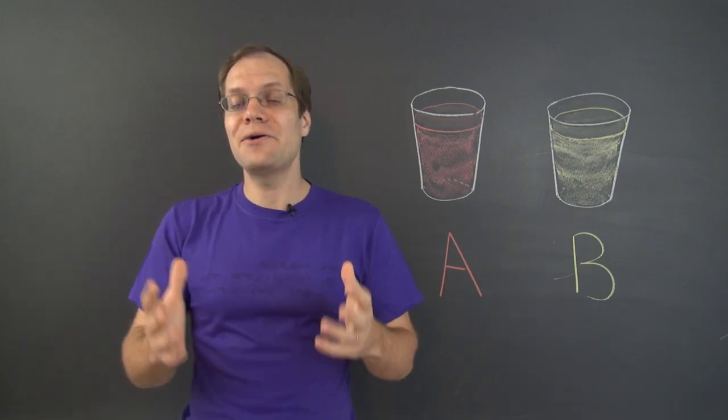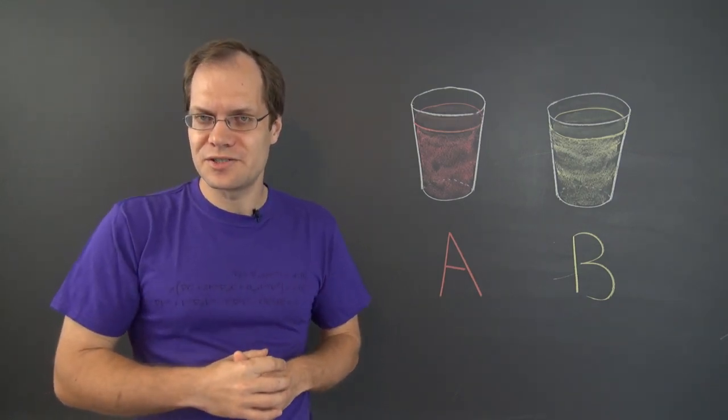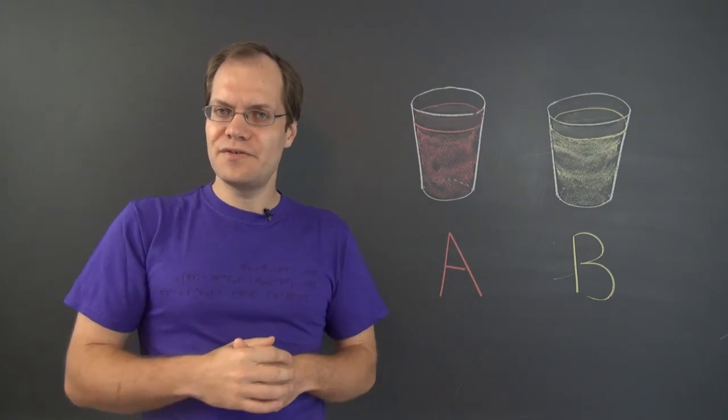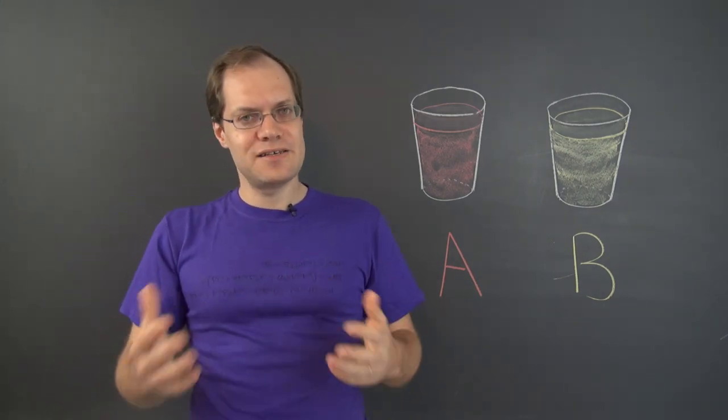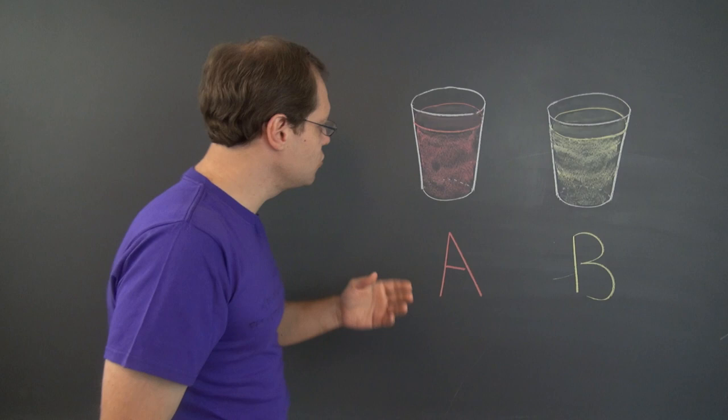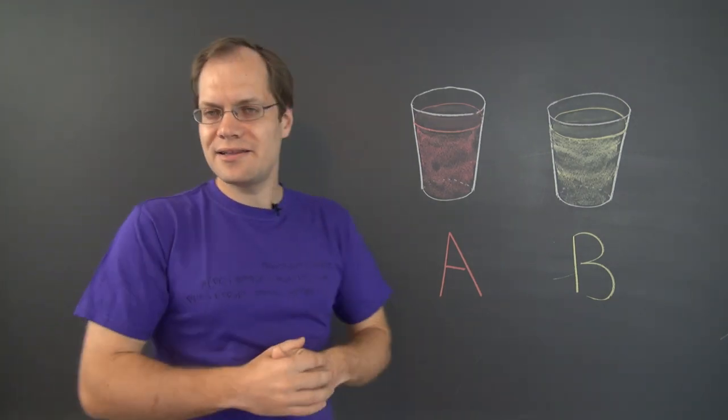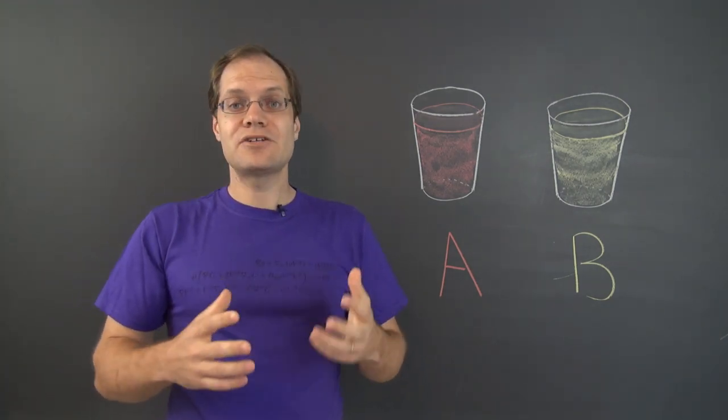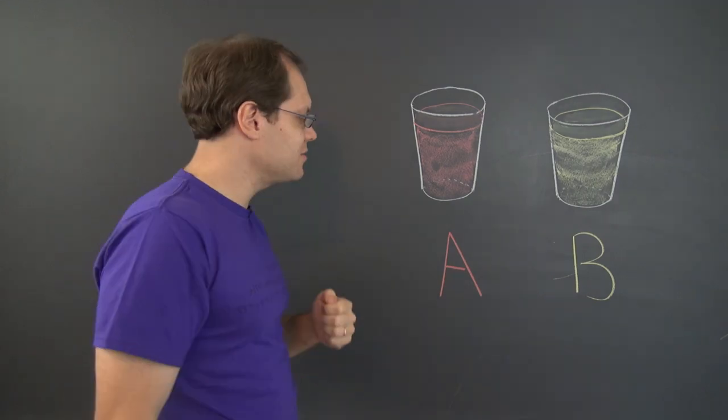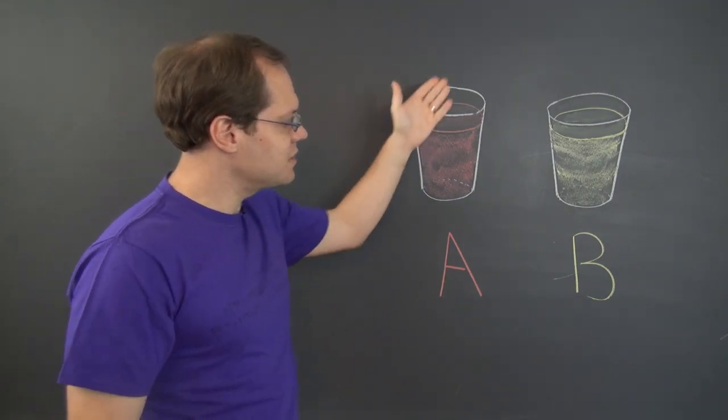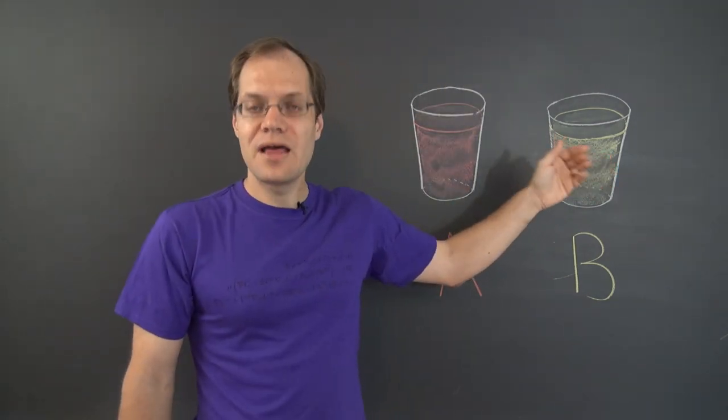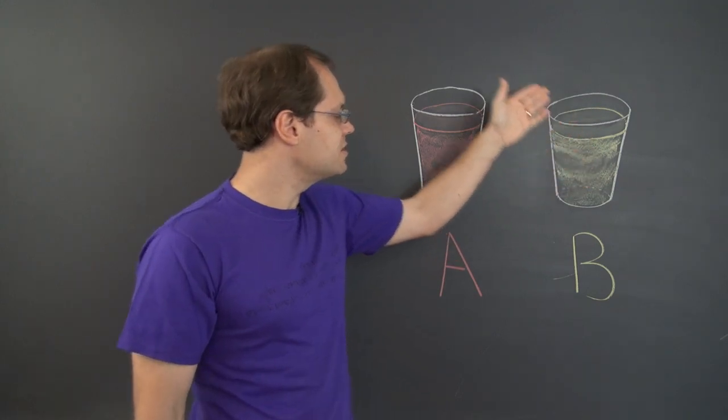Now here's how I would recommend going about solving this problem. I think you should first try to solve it in your head, with some specific numbers. Just assume that the spoon is one-tenth the size of the cup, and actually use fractions to calculate exactly how much of liquid A there is in the second cup, and how much of liquid B there is in the first cup.